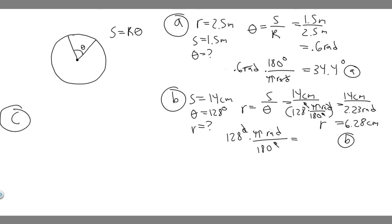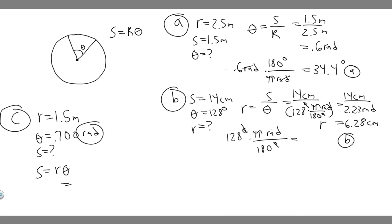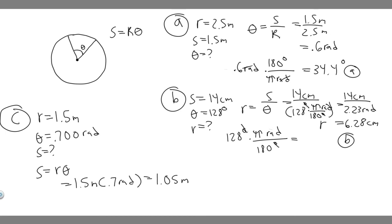Now Part C: the angle between two radii of a circle with radius 1.5 meters, where the angle is 0.7 radians. We're trying to find the arc length S. Using S equals R theta, and we don't need to convert units this time because the angle is already in radians. So S equals 1.5 meters times 0.7 radians. Since radians are effectively unitless, the result is in meters — approximately 1.05 meters. That's the arc length for Part C.